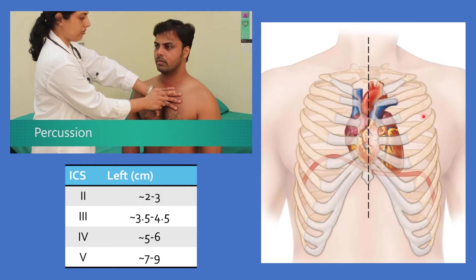Next, percuss the third intercostal space using the same procedure — start from the lateral side going medial, percussing from resonance until you reach dullness at the border of the heart. Measure from the mid-line to the area of cardiac dullness. At the third intercostal space, the measurement should be approximately 3.5 to 4.5 centimeters.